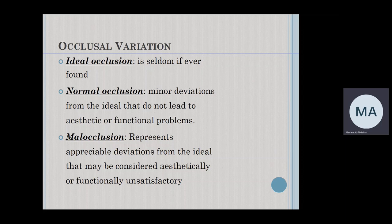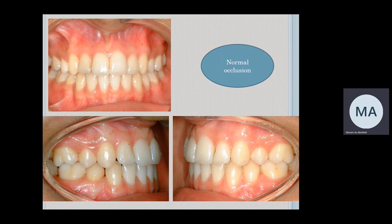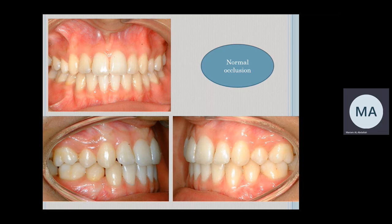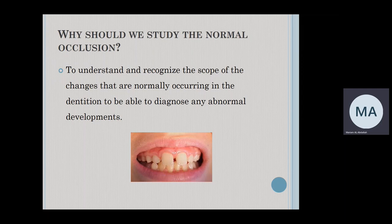To know what is normal occlusion, we already explained the six keys to normal occlusion by Andrews. If the deviation from the ideal affects aesthetic or function, then we call this malocclusion, which represents about 65% of the population. This lecture will focus on normal occlusion — you need to know how normal occlusion develops at different stages of dental development, and how we reach the permanent dentition with a proper occlusion. It is important to know what is normal in order to identify what is abnormal.